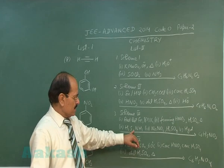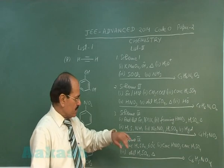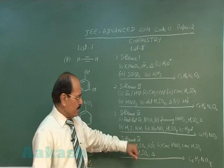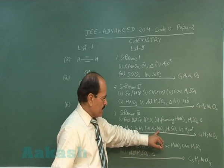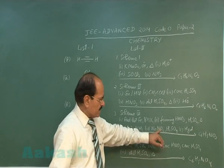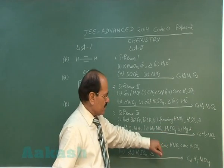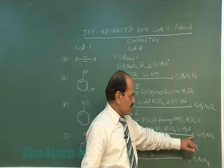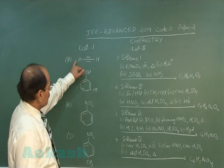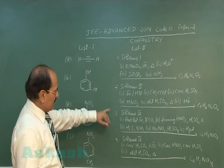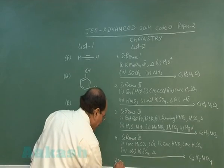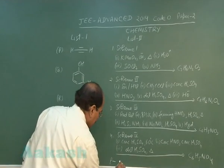Under these conditions, one of the two nitro groups is reduced, giving us meta-nitro aniline. Meta-nitro aniline is subjected to diazotization. The NH2 group is converted into a diazonium salt, and on hydrolysis we get meta-nitro phenol. So the compound P matches with scheme three.